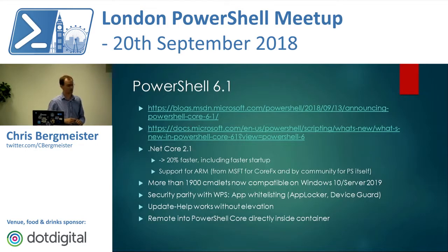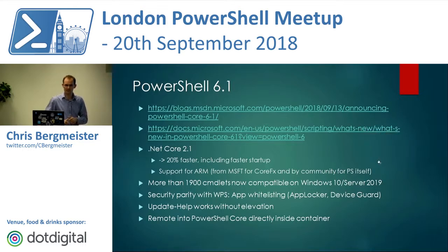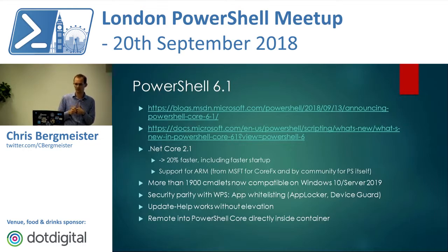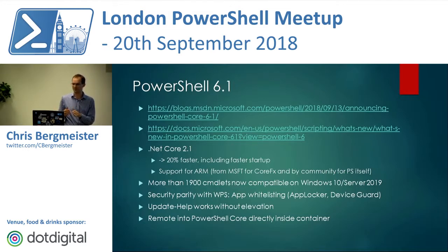PowerShell 6.1 has been released — a blog post from the PowerShell team is linked. Basically what has changed is bugs have been fixed and they're now using a new CLR runtime. The reason it's called PowerShell Core is that it uses .NET Core. .NET Core 2.1 was released in the meantime and 2.1 is basically faster. That speed difference is what you mainly see in practice. Some commands have been improved, but it's mainly the speed improvement.